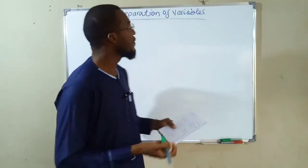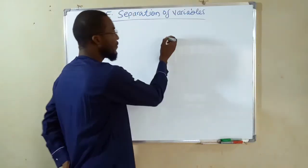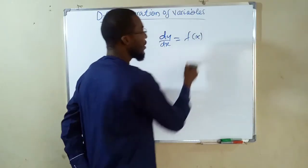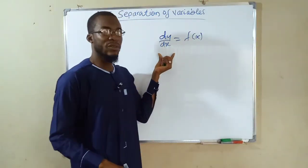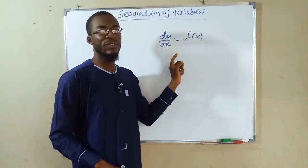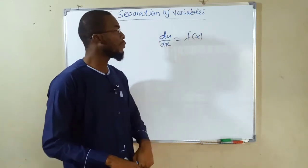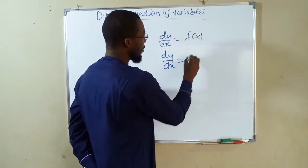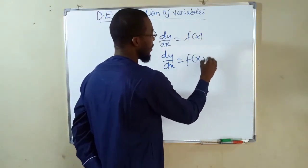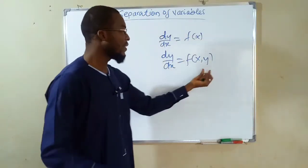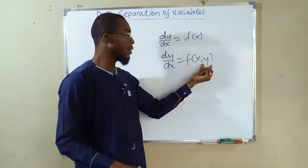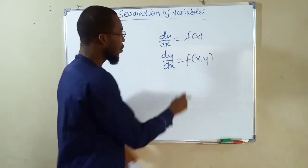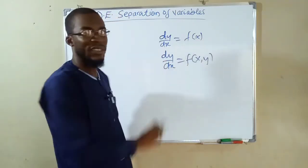In our previous lesson, you have seen that we solve differential equations in the form of dy over dx equals some function of x. In that case, all we have to do is integrate both sides. But sometimes our differential equation may appear in the form of f(x) and y, which involves multiple variables. Because of the function of y on the right-hand side, we cannot apply integration directly — we have to separate the variables, connecting x with dx and y with dy.